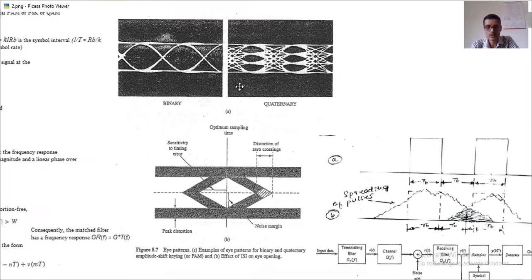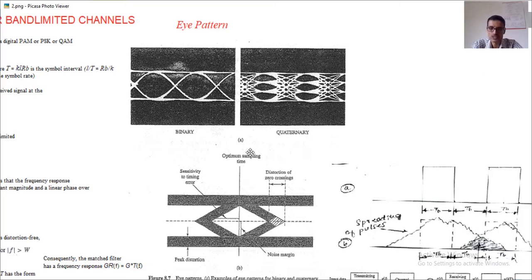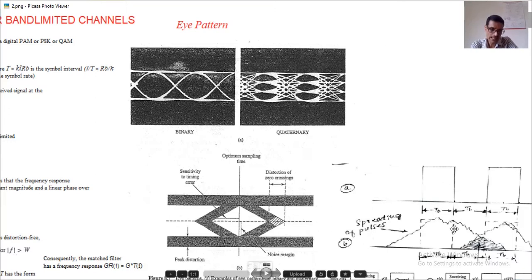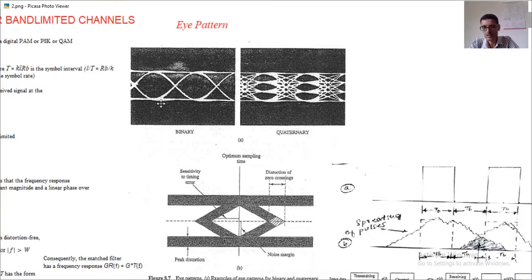To detect the symbol in the presence of ISI, the received signals are displayed on a CRO — cathode ray oscilloscope. The received signal is given to the Y channel; the X channel is given a sawtooth waveform so the beam sweeps back and forth. These individual pulses within the bit interval are placed one over the other. The waveform we get for a binary transmission looks like a human eye — that is why it is called an eye pattern. The received signal displayed on the CRO is called the eye pattern.